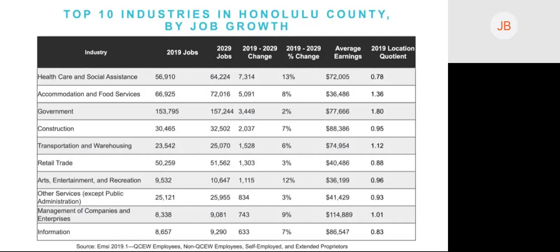This is an example of how we might initially use labor market information to look at industries at a regional level. Here we're looking at Honolulu County in Hawaii, with two-digit industries ranked by job growth. We can share data about the number of jobs expected to be added over the next 10 years, the average annual salary for the industry, and the location quotient. A location quotient quantifies how concentrated a particular industry is in a region compared to the nation, revealing what makes a region unique. Location quotients over one indicate greater concentration than the national average — for Honolulu, accommodation and food services and government are examples.